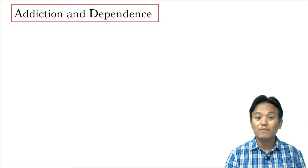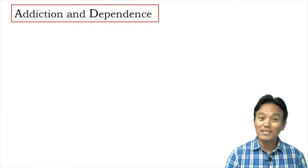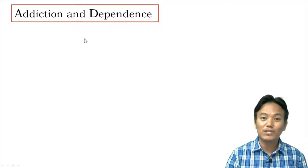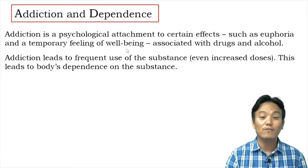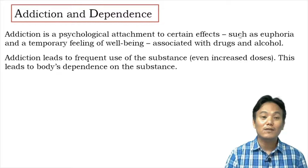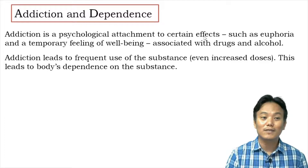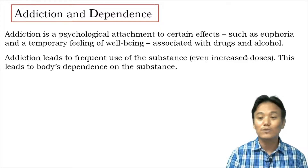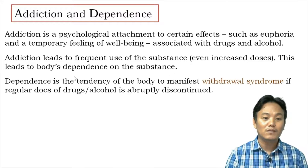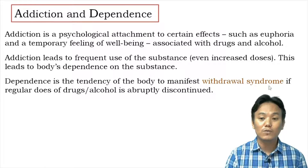Many commonly abused substances are quite addictive, and addiction can lead to dependence. Addiction is a psychological attachment to certain effects such as euphoria and temporary feelings of well-being associated with drugs and alcohol. The person becomes attached to those feelings and therefore becomes addicted. Addiction tends to lead to frequent use of the substance, often in increased doses, which leads to the body's dependence on the substance.